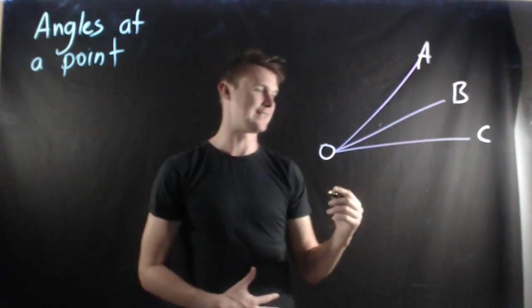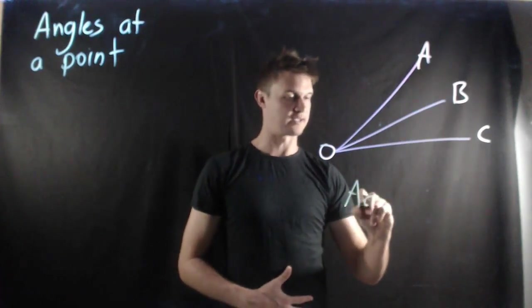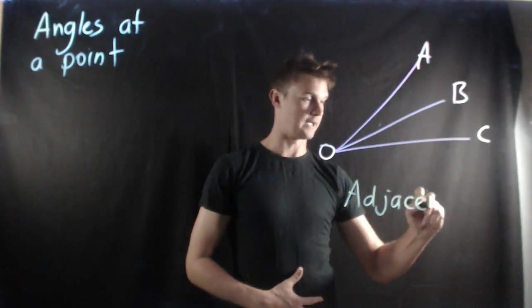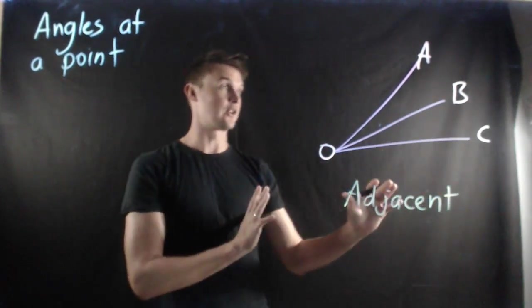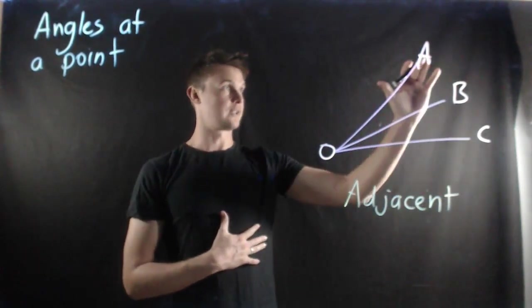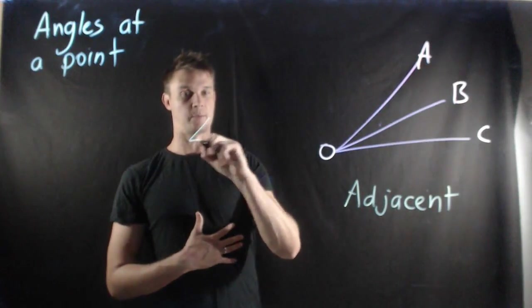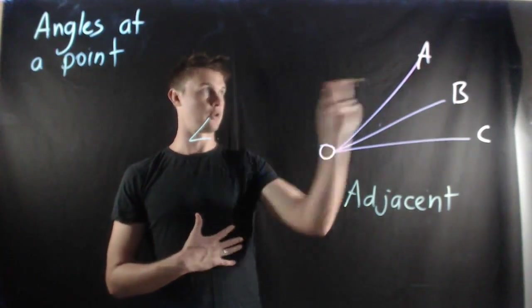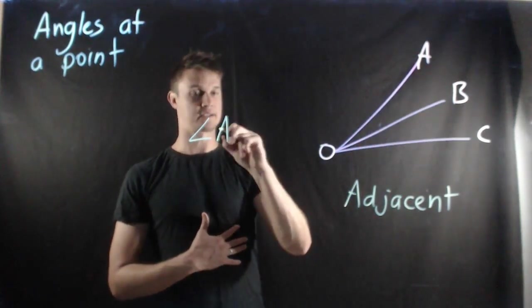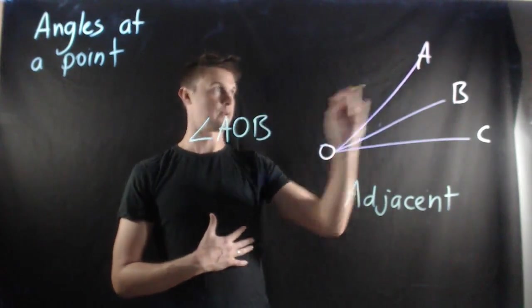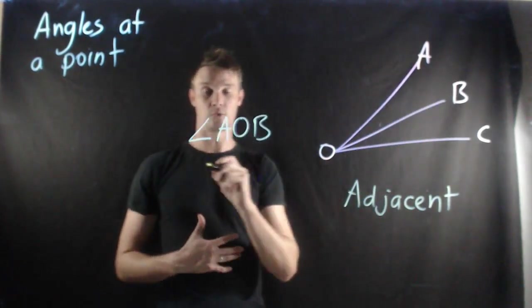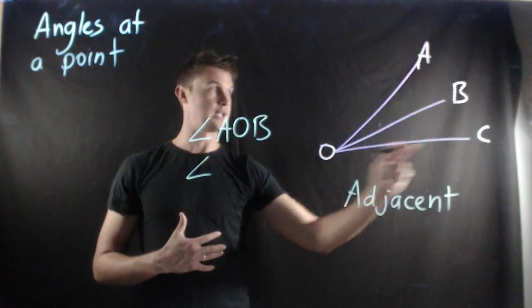The first one we look at is what we call an adjacent angle. In an adjacent angle, remember when we design or draw an angle we go from one part back to the vertex and out again. So we have angle AOB is also adjacent to angle BOC.